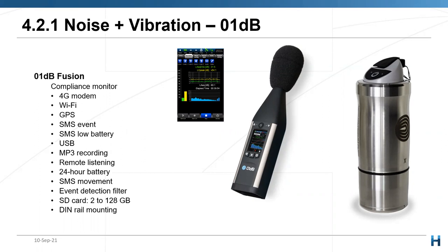As far as vibration goes, the 01dB Orion is the main unit we use there. This is an IP67-rated instrument and is basically fit and forget — you take it to site, level it, install it where you want it, and then it communicates from there. You can leave it outside. This is a compliance vibration monitor with 4G as the main communication. You can also use Wi-Fi. It has built-in sensors and GPS. If someone tampers with it, you'll get an alert, and it communicates via SMS for any events or low batteries.